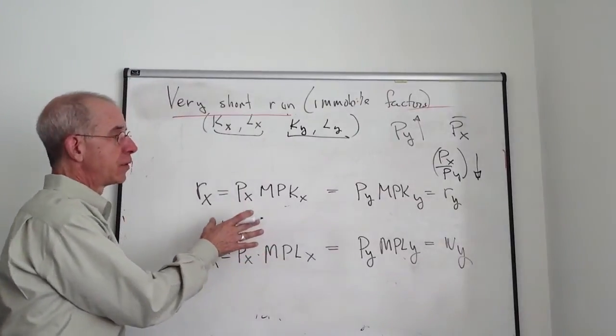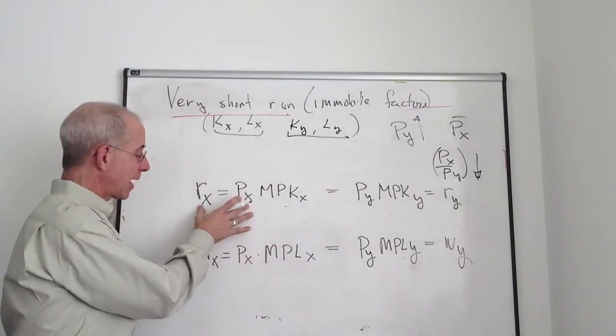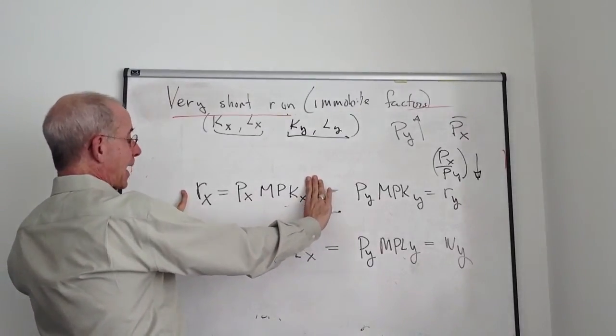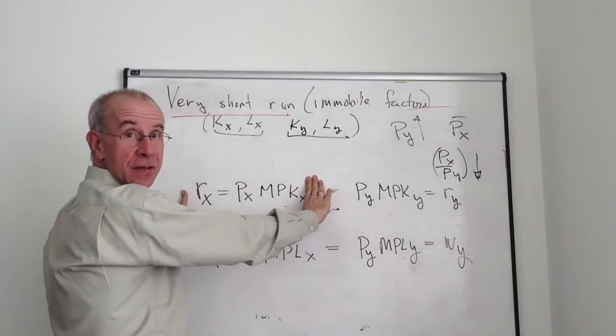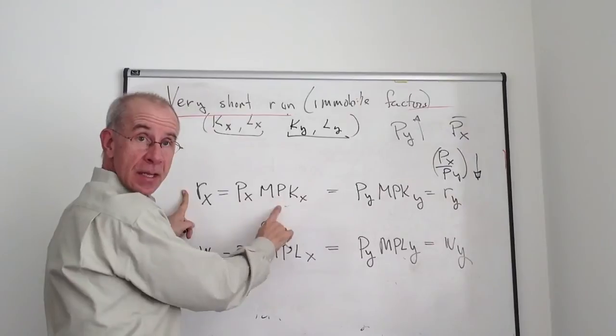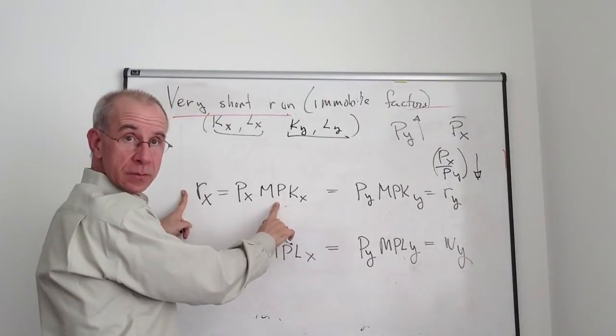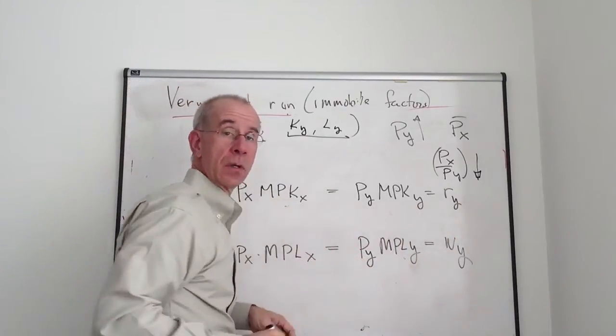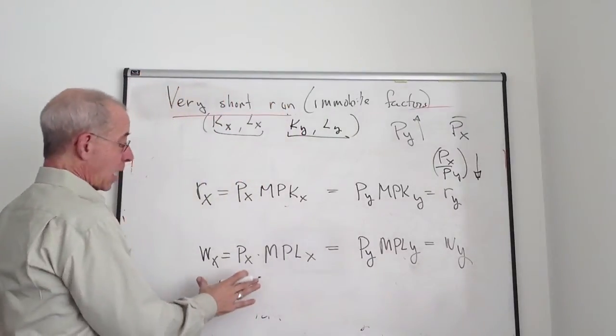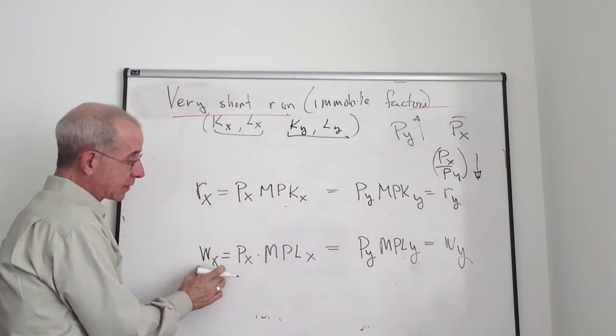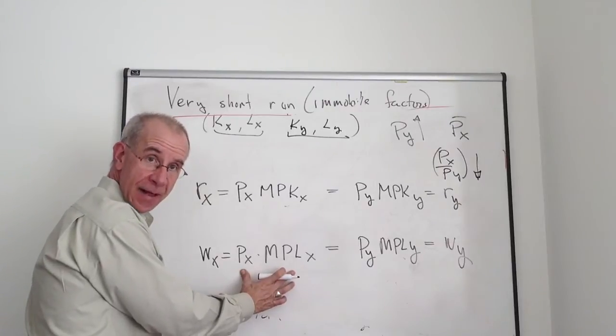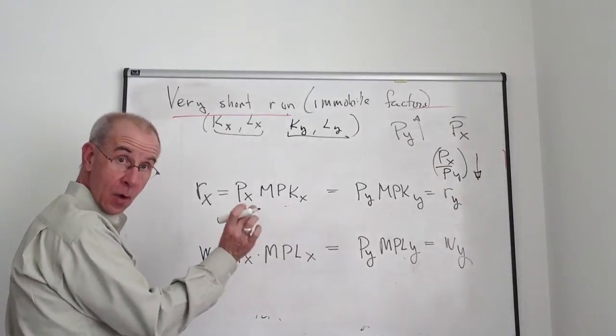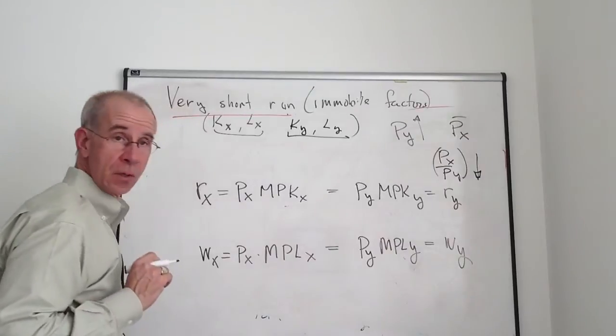What I have here are the two factor market conditions for capital and labor. This part is capital in X being paid - it's the value of marginal product. The price of X times how much extra output you earn by hiring another unit of capital. Analogously for good Y. And for labor, the wage in X equals how much labor is valued based on the amount it produces at the margin and the price of X. The same way for the wage in Y.